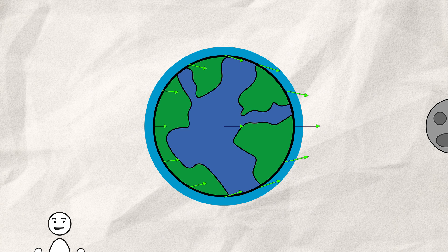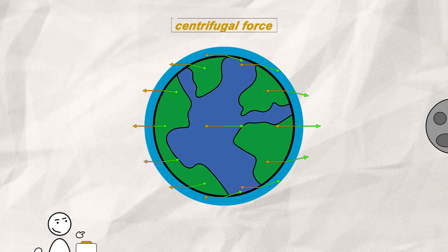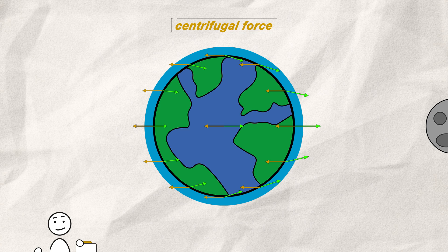We've also ignored an important value, the centrifugal force. For this, we have to draw even more arrows. The rule is simple. All are facing away from the moon and have the same strength.